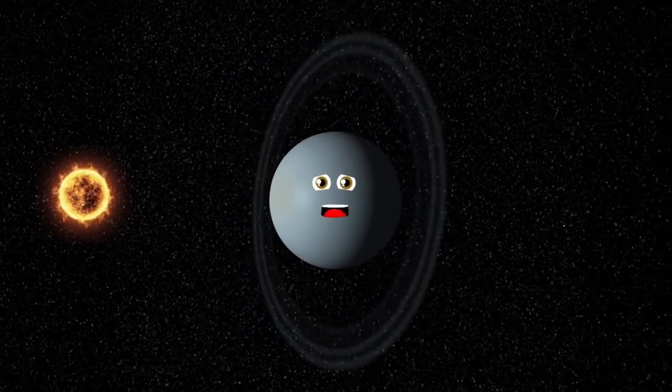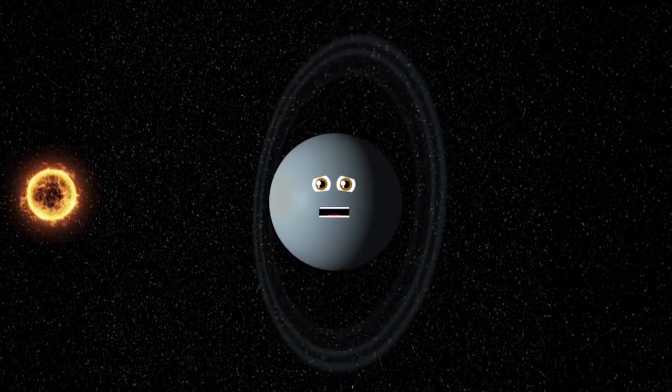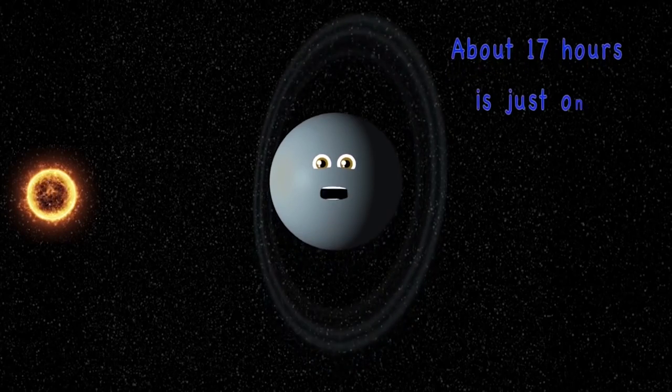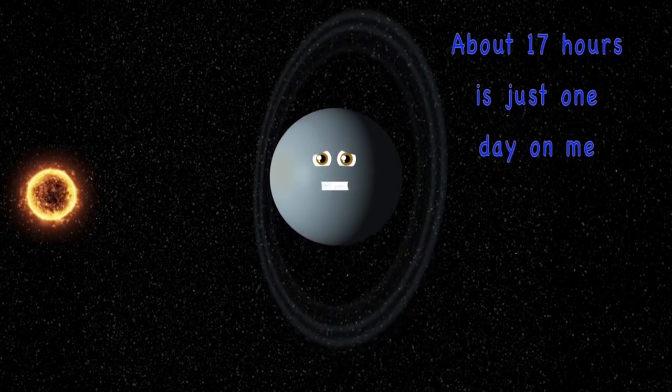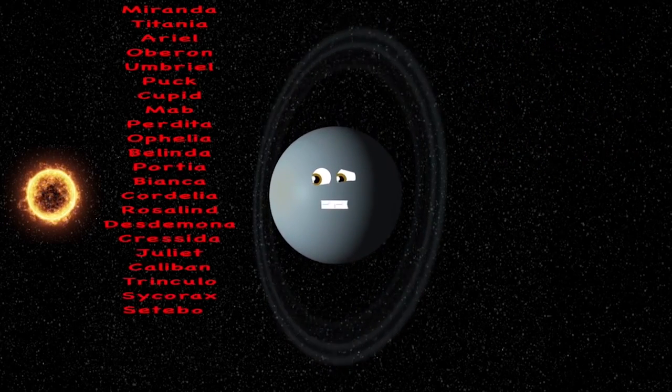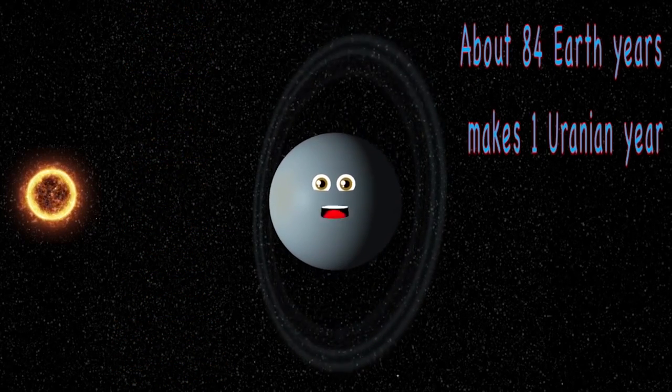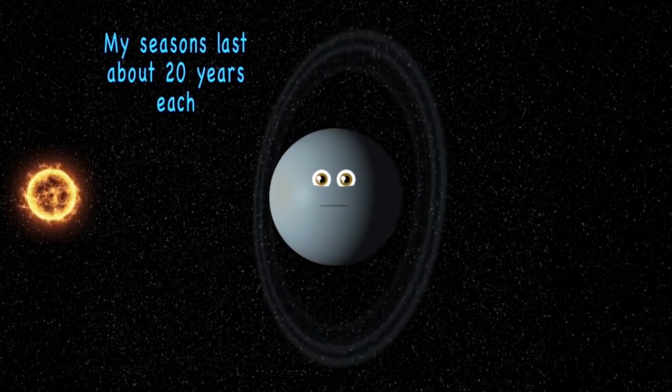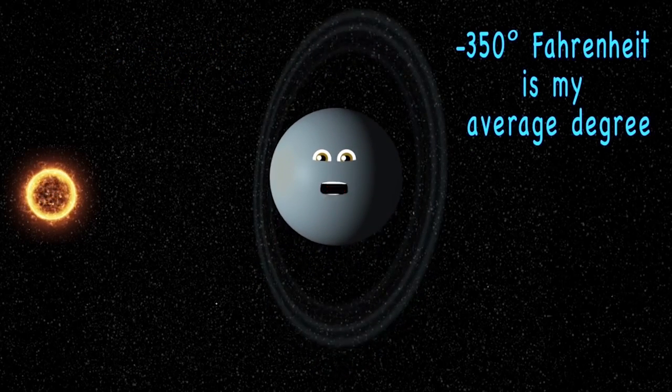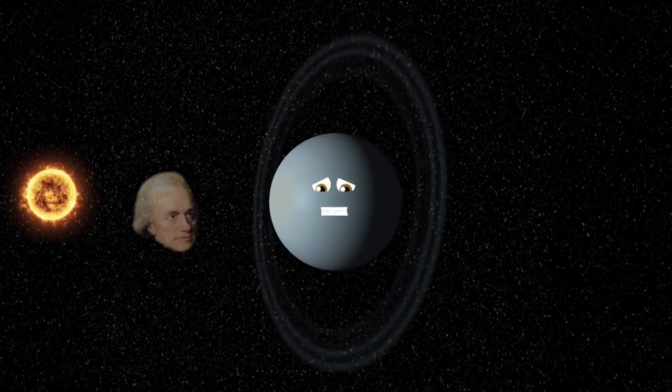I am Uranus and I have 13 rings now. I am Uranus, the seventh planet from the sun. About 17 hours is just one day on me. I have 27 moons named after Shakespeare characters, and I have 13 rings that you can clearly see. About 84 Earth years makes just one Uranian year, and my seasons last about 20 years each. Negative 350 is my average degree, and William Herschel did discover me.